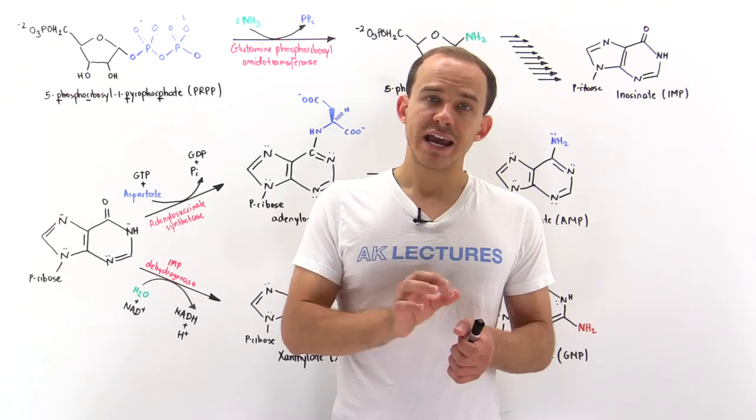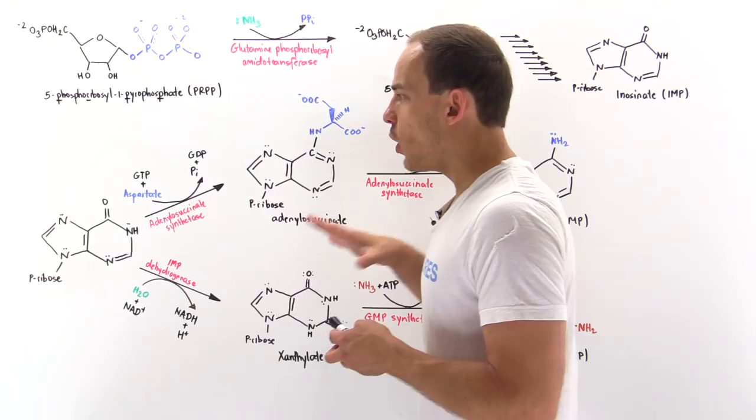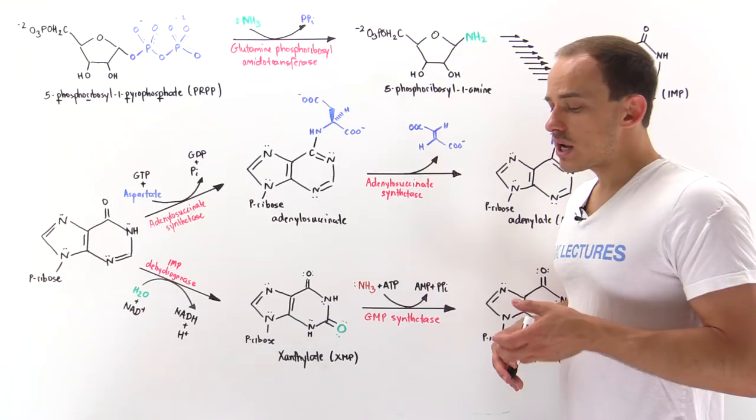Now, in the same analogous way, we can also build purines via these two pathways. We have the salvage pathway and we have the de novo synthesis of purines. We're going to focus on building these purines from scratch in this lecture.